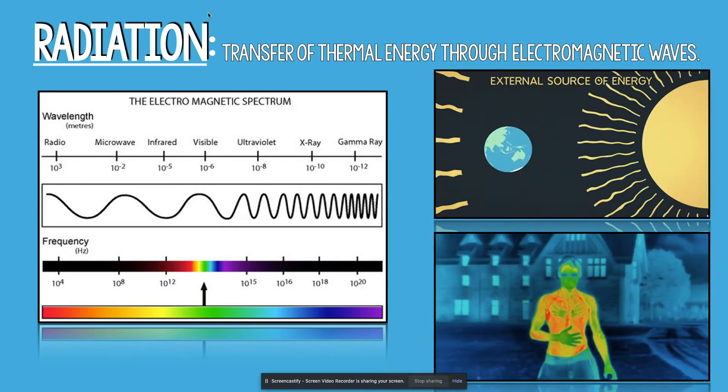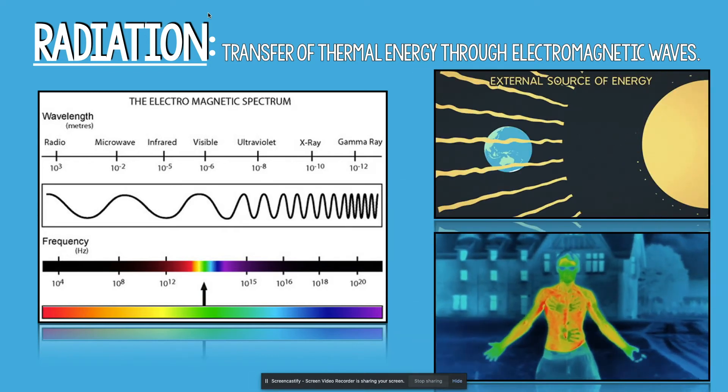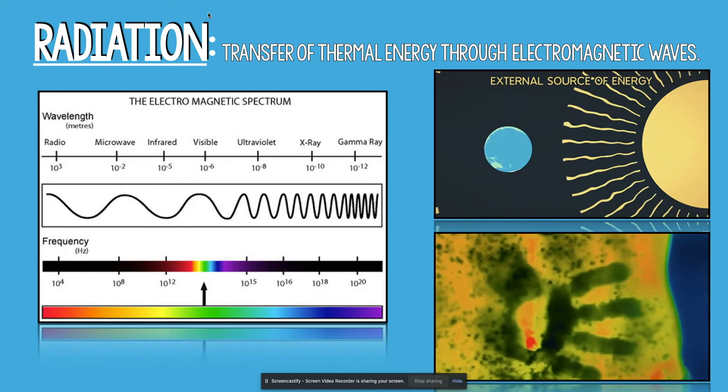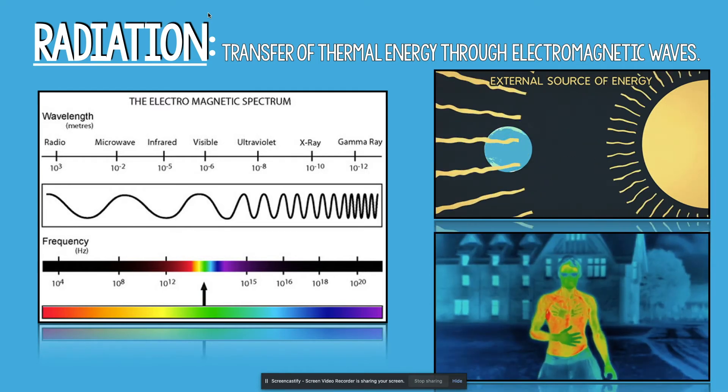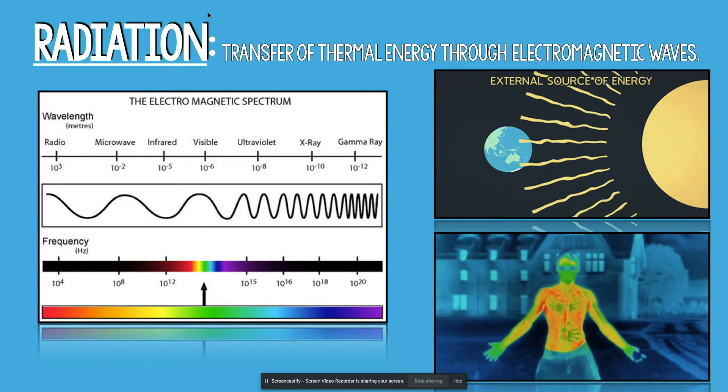The sun releasing all of its electromagnetic energy towards the earth is an example of radiation. You also, because you're warm-blooded, produce lots of thermal energy and therefore produce lots of infrared radiation.